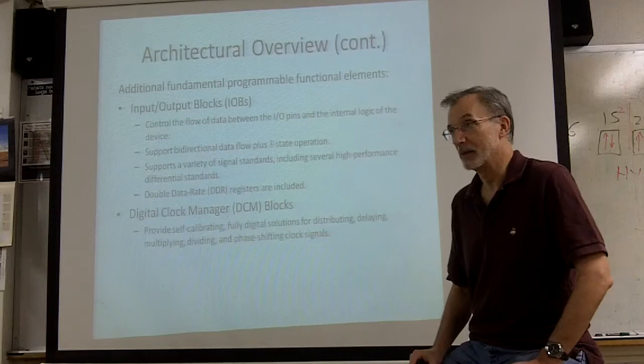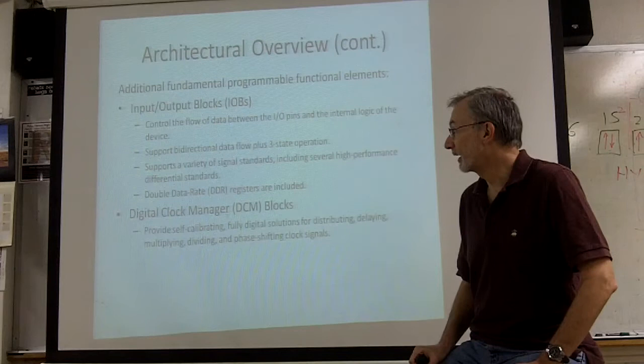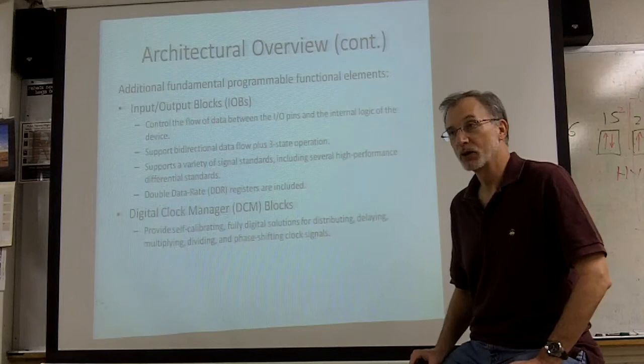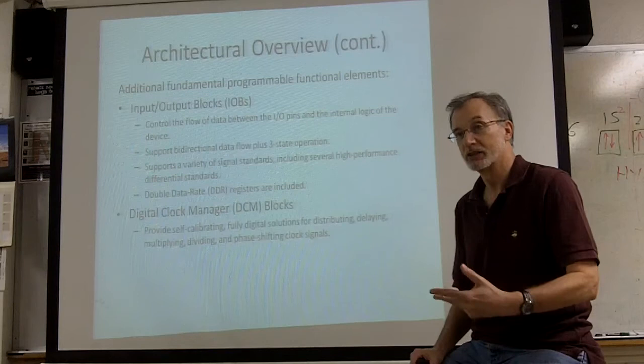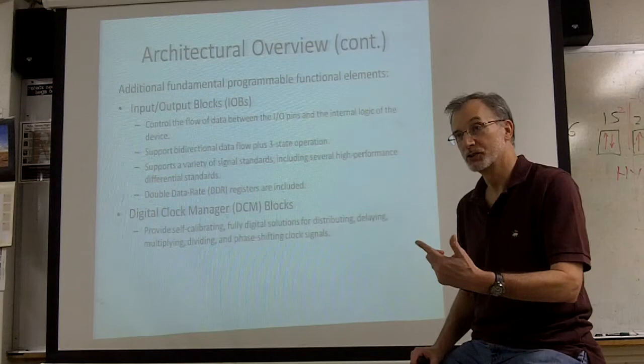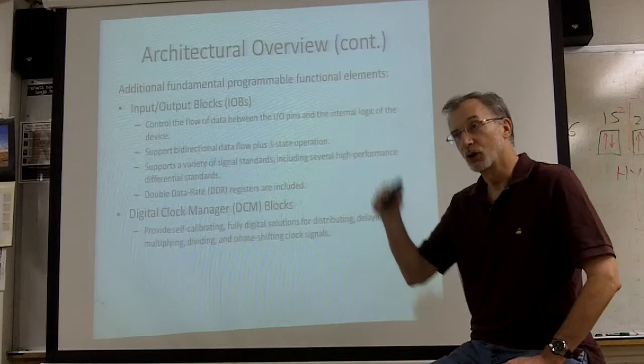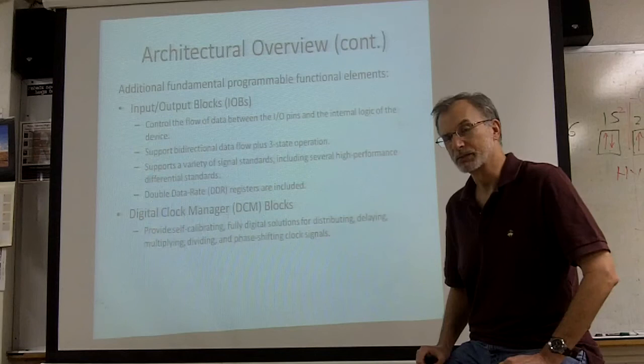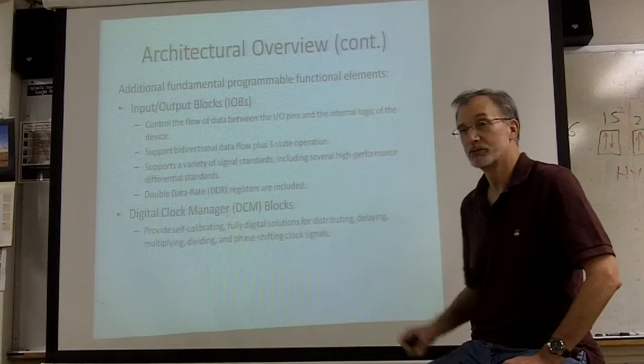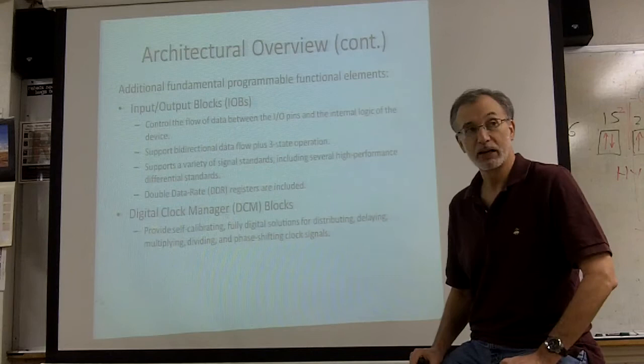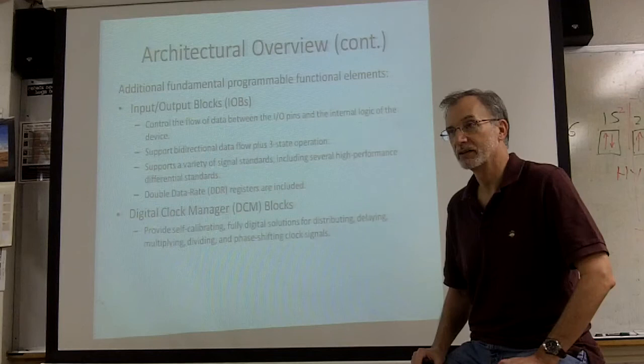Double data rate registers are also included in the I/O blocks. The last block are the digital clock manager blocks. It's very important that we get clock signals distributed around the FPGA with very little clock skew. The clock skew is the difference between the clock pulse that comes in at one edge of the chip and that same clock pulse distributed to other portions of the chip. So we have these digital clock managers distributed around the FPGA to simultaneously synchronize all the clock pulses so they reach the logic at very close to the same time.